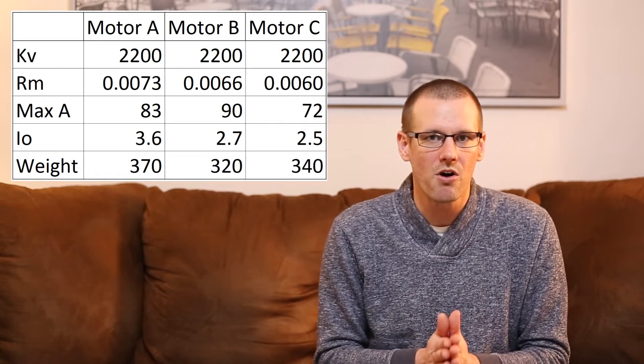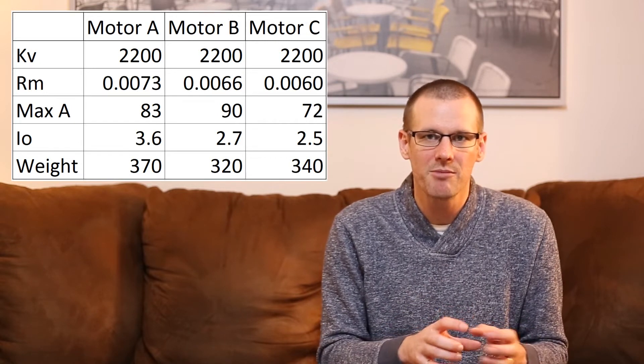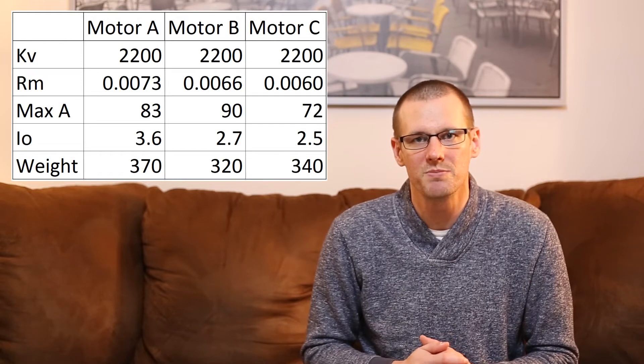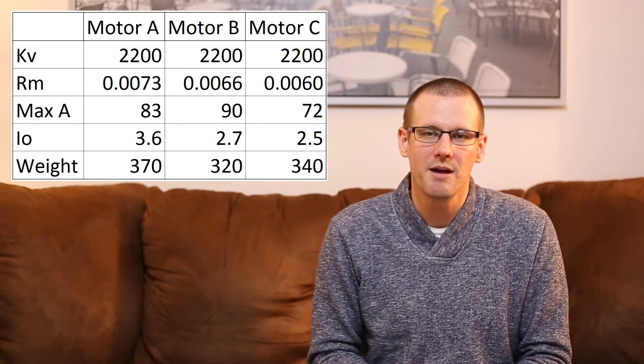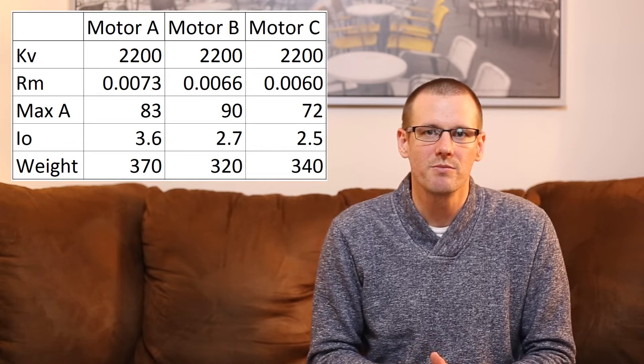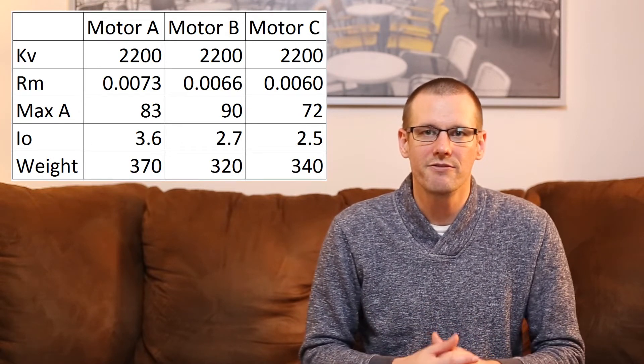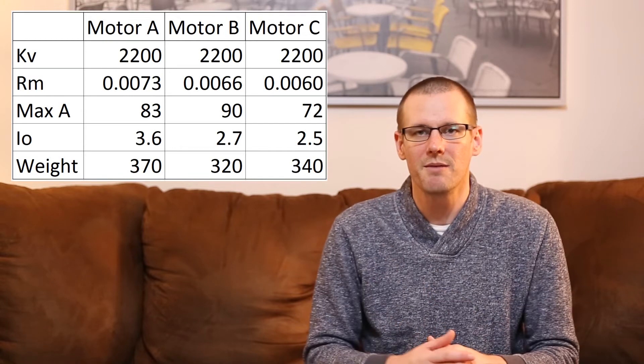Like I said, the motors are all relatively the same diameter and length. There's not much difference. We're talking within a few millimeters between each one another. It does show us here that motor C is the best motor in terms of efficiency. It has the potential to be as efficient as we could expect with these numbers.